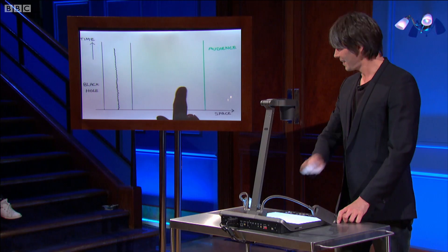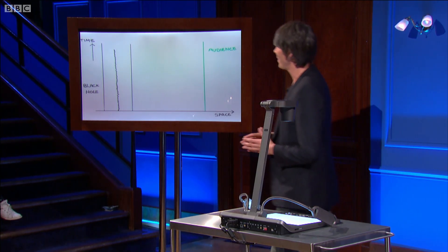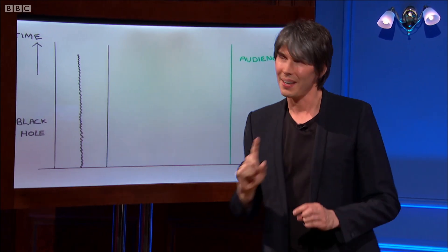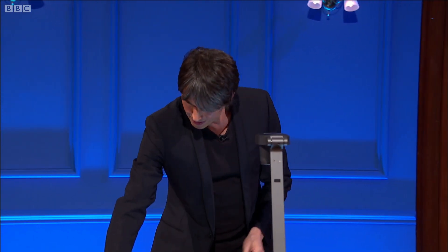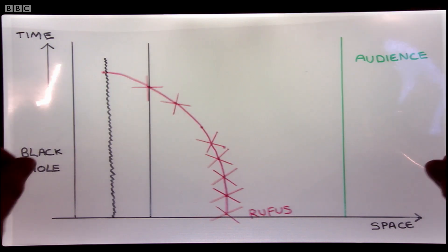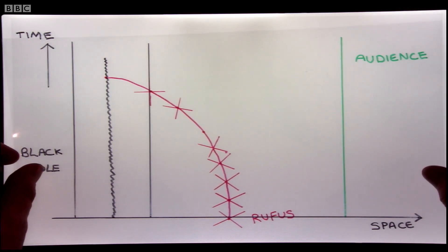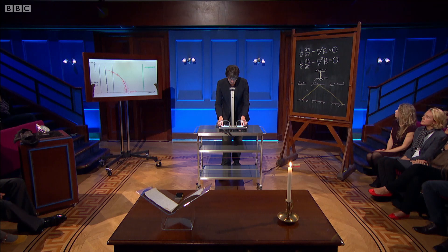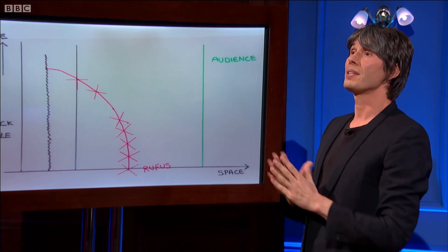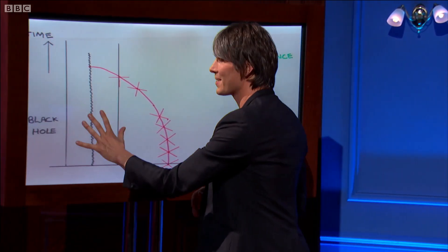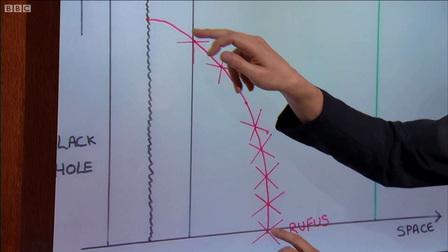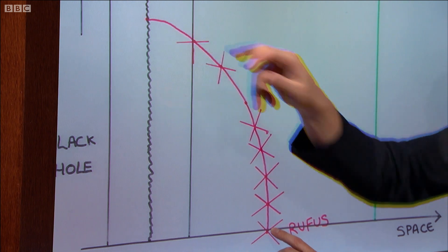Here is the space-time diagram again. The black hole is sat here, stationary — there's the singularity, here are the event horizons. What I'm going to do is superimpose Rufus's world line onto this diagram. We're looking at Rufus from the point of view of the black hole, so it's just sat there going nowhere, and Rufus is on a journey towards the event horizon and beyond into oblivion.